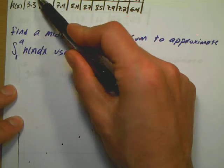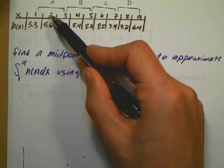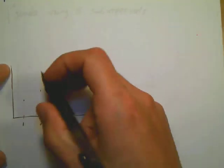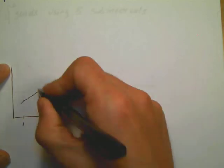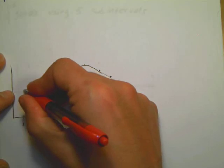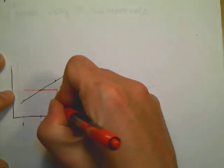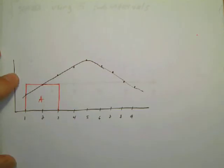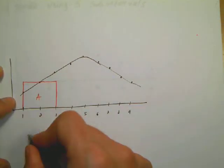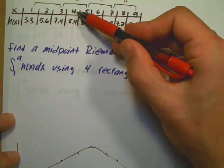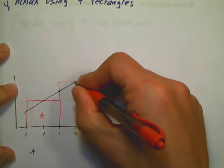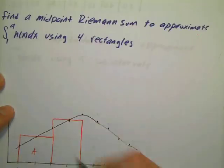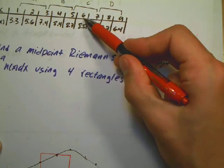Now I want to use the value in the middle of each interval. The middle of one to three is two, so I use the value at two — that's the height for rectangle A. For rectangle B, it's the value at four. For rectangle C, the value in the middle is at six. Again, some of the rectangle will be sticking inside and some outside.